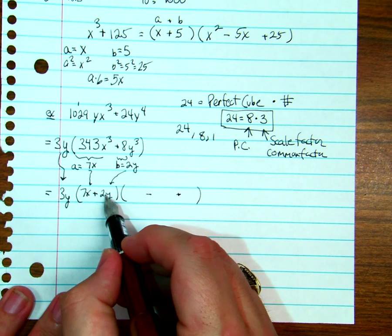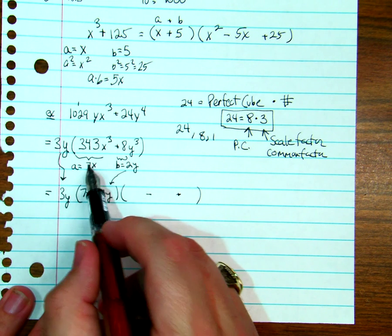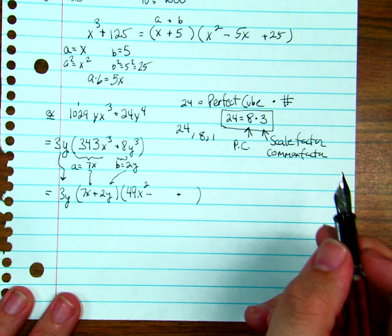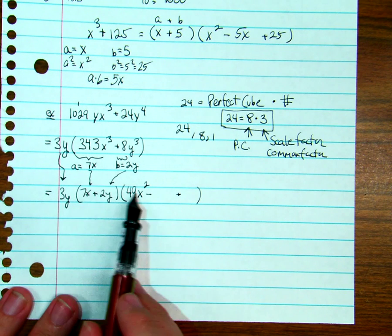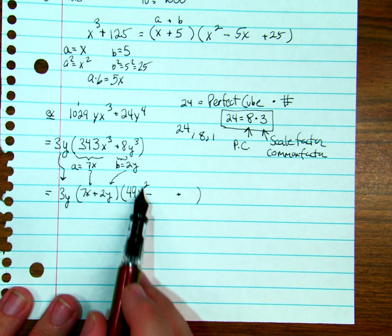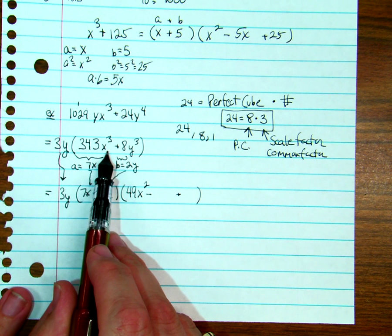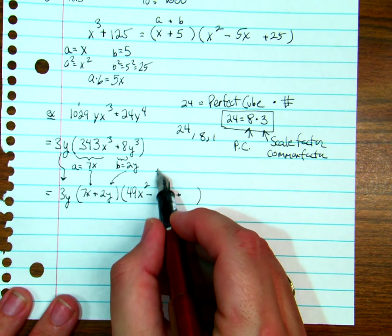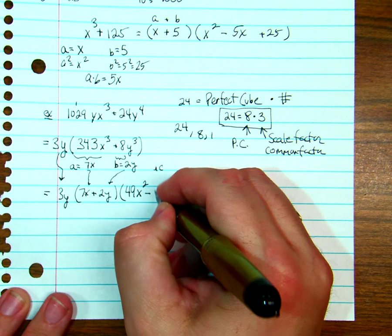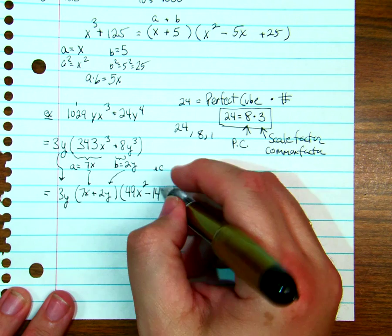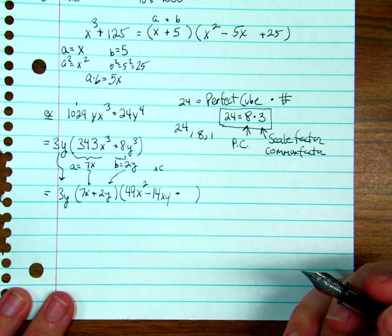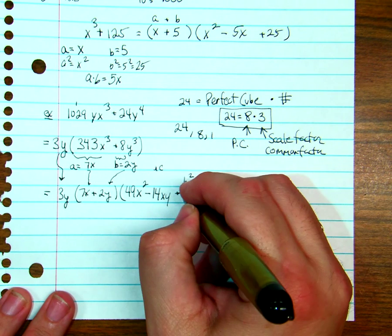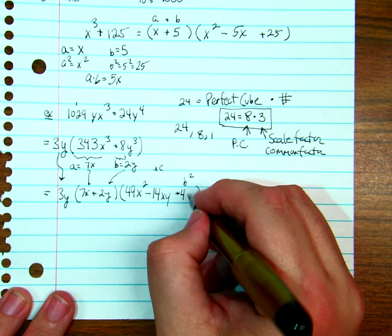Now I need to take a and square it. What's 7 times 7? 49. What's x times x? I'll get x squared. We don't want x cubed, because if I did 7x times, or if I did just the x times the x squared, it gets me back to my x cubed. Now in the middle, I just need a times c. So I have 7 times 2, which is what? 14. I have x times y, which is? xy. And now I need b squared, which is going to go right over here. What's 2 times 2? 4. y squared is y squared. And you're done.